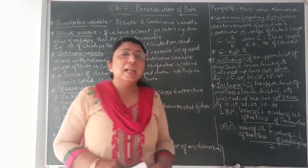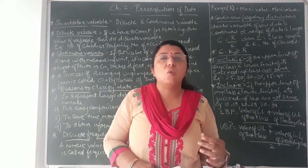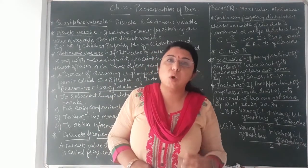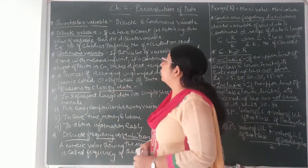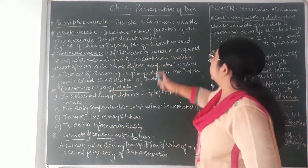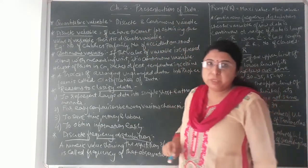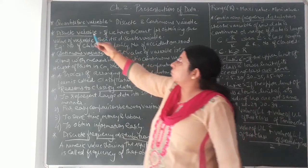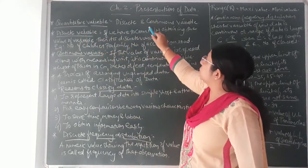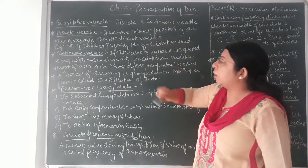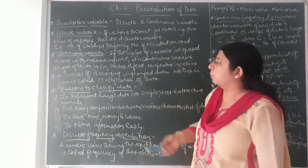In the last chapter you studied two terminologies: quantitative data and qualitative data. Now in case of quantitative variable, there are two terminologies — discrete and continuous variable. We'll now understand what is discrete variable and what is continuous variable.